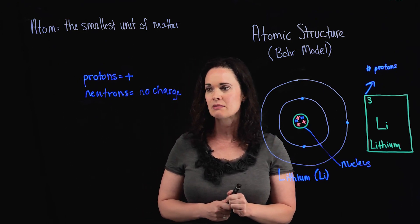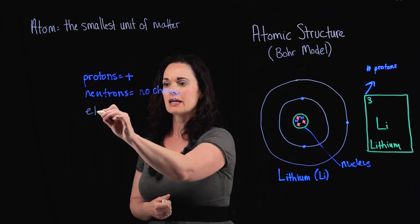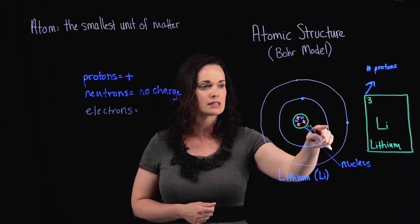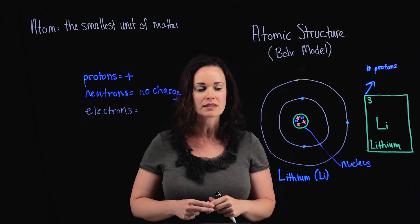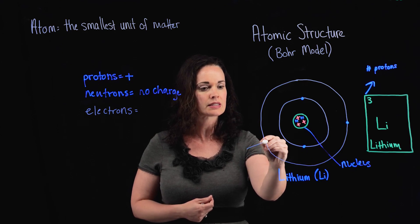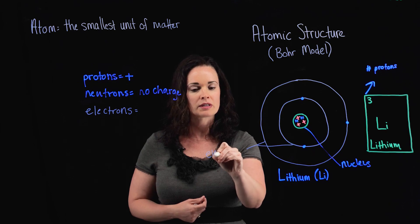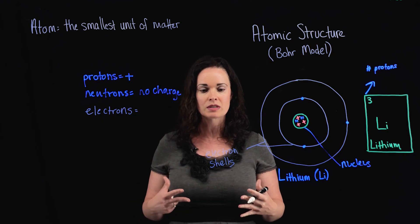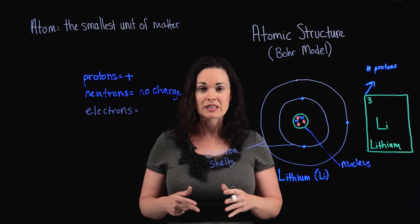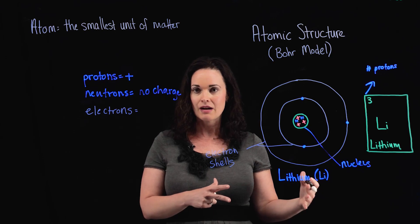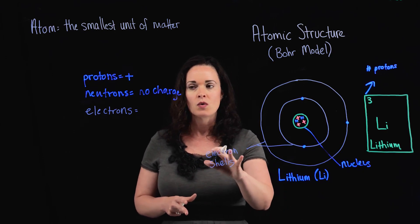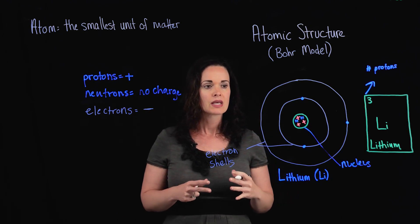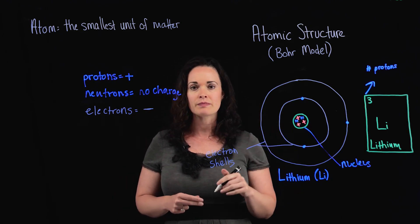The last subatomic particle — working alongside protons and neutrons to make up an atom — is what's known as an electron. Electrons are not found in the nucleus. Instead, they're found in areas that surround the nucleus. I've heard these called electron shells, orbital shells, orbitals, or electron orbitals — all sorts of different names. Don't let that confuse you. Basically, this is the area surrounding the nucleus of an atom where we find the electrons.